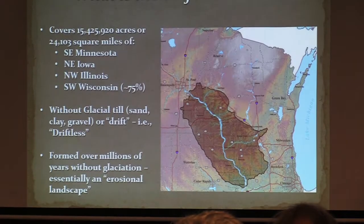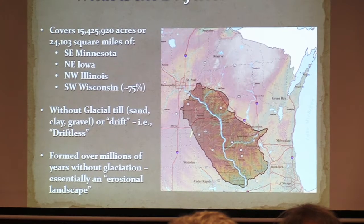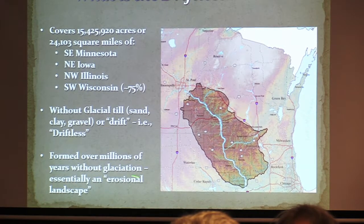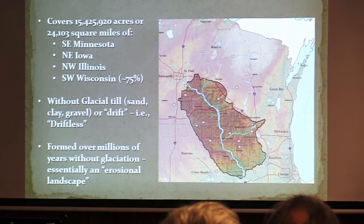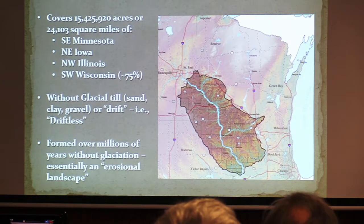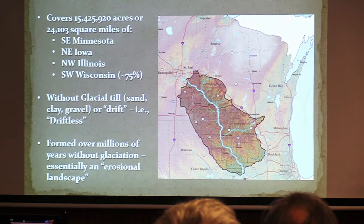Let me start with the Driftless Area. For those of you who don't know what the Driftless Area is, it is an area without glacial drift. The Wisconsin lobe came down here, the Illinois lobe came down here, the Missouran lobe came down here, but they never came into the Driftless Area. In the last couple million years, glaciers have not come into this area. The true Driftless Area is right here on the map, though there is glacial drift in Iowa and Minnesota — you can still call it the Driftless Area.